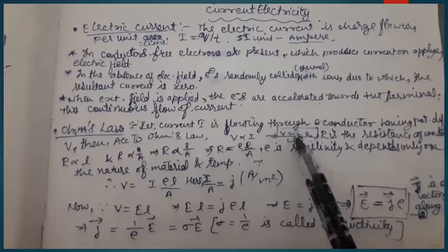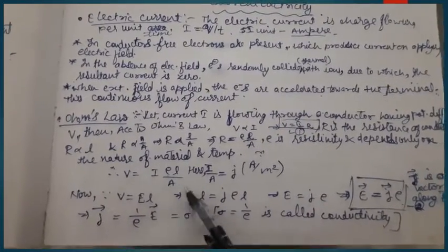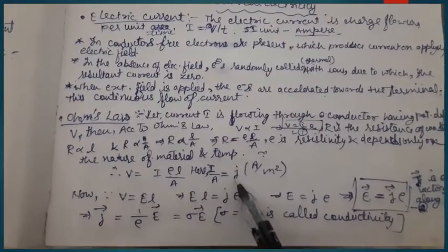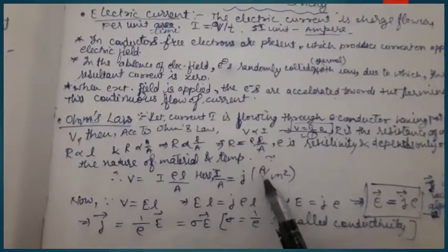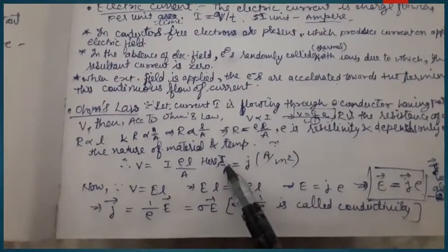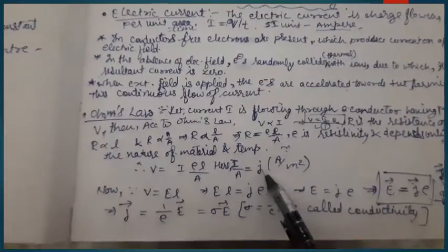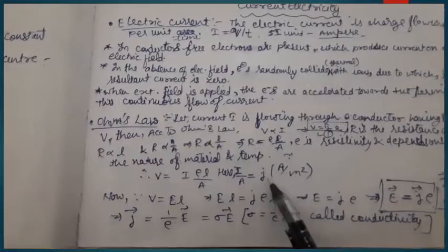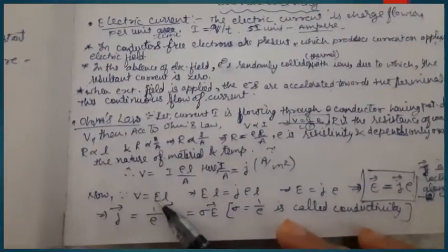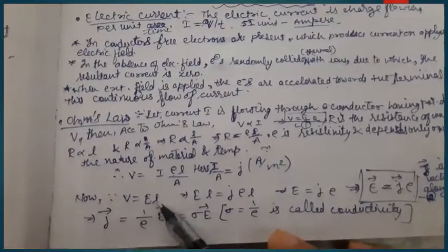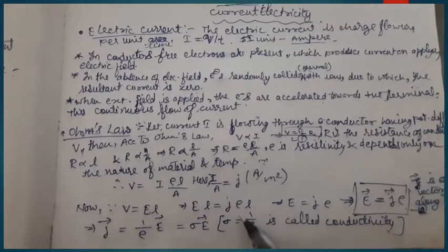Here, the quantity I/A is known as current density, represented by J. Its SI unit is ampere per meter square. This is a new quantity we are learning about. There is another relation between potential difference and electric field: V = E × l.